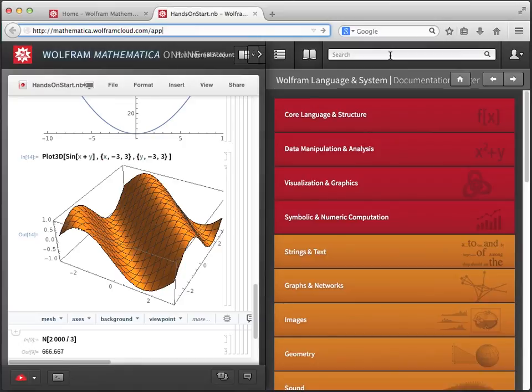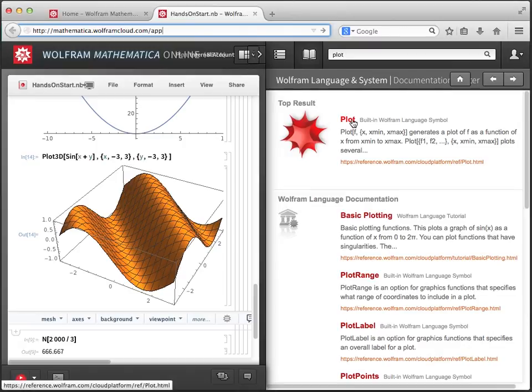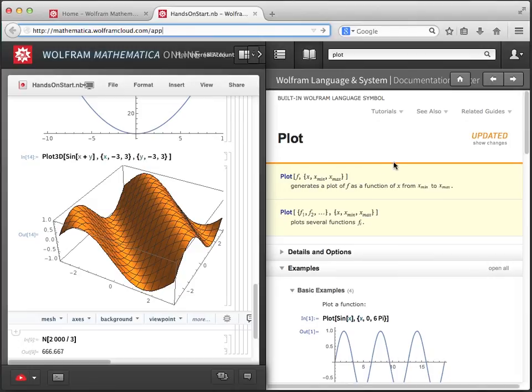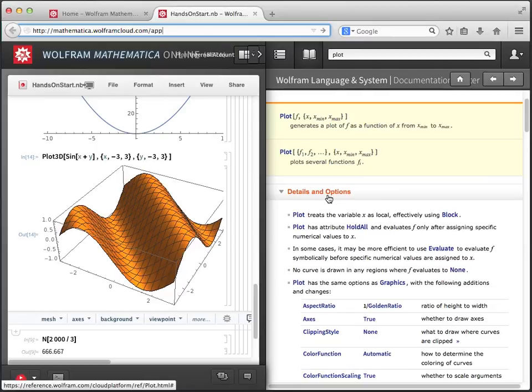Once there, you can browse by topics, or if you're more impatient like I am, you can type in a search term. So, if I type plot, and then do a search, the first result I click on is a reference page for the plot command. Now the first thing you'll see is a sort of dictionary definition of the command up at the top, and then additional sections like details and options, which are great for learning about the command in much more detail.